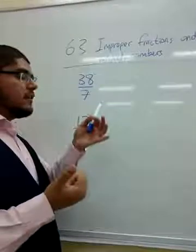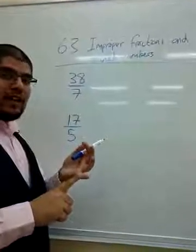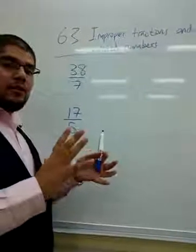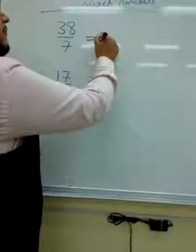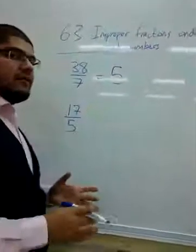So, that means it's 35. So, that means we have 5 wholes of 7. So, we'll write our big 5.